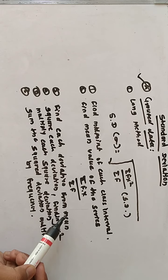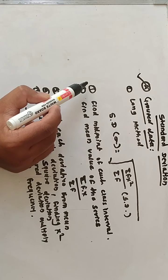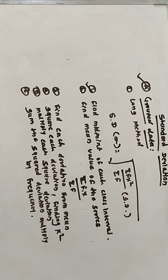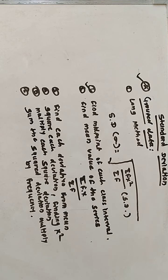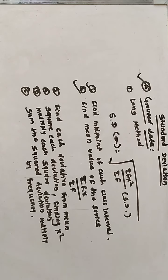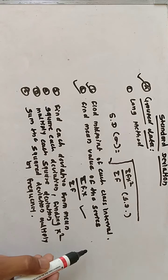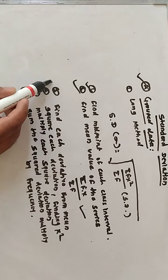Step number one: find out the midpoint of each class interval. Step number two: find the mean value of the series using the formula — summation of f·x divided by summation of f. After this step we go to step number three.